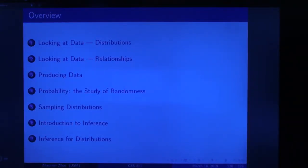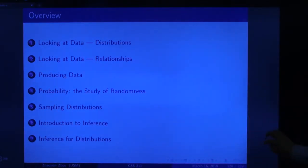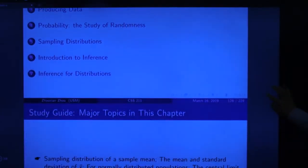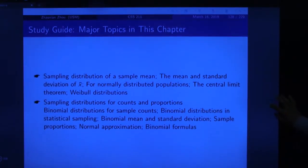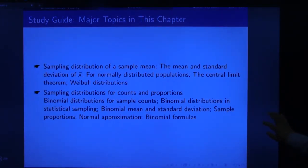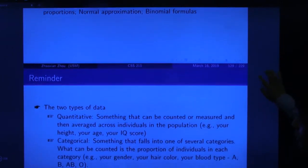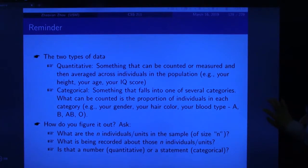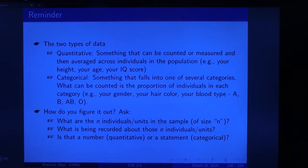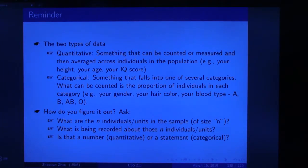Today we start a new chapter: Sampling Distribution. These are the topics we are going to discuss in this chapter. First, let's recall the concept from Chapter 1. We have two types of data: quantitative and categorical.